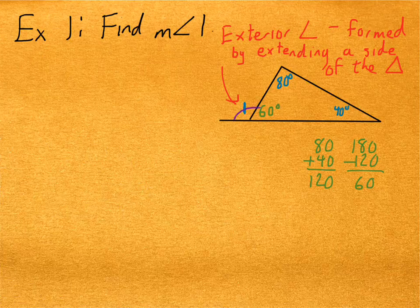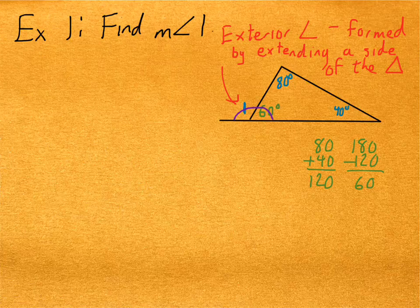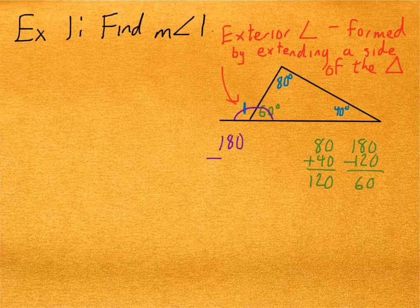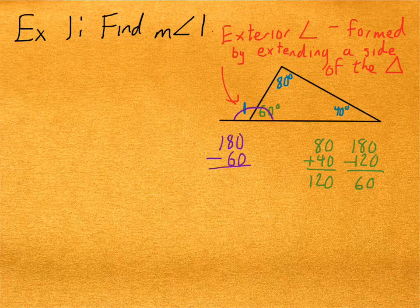Well, you probably noticed that those two angles are supplementary because they're a linear pair. Therefore, to find the measure of angle one, I could subtract 60 from 180. That would give me 120. So the measure of angle one is 120 degrees.